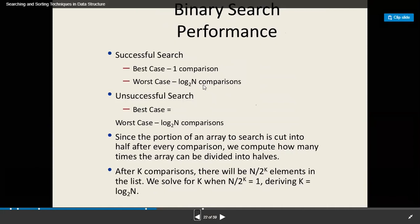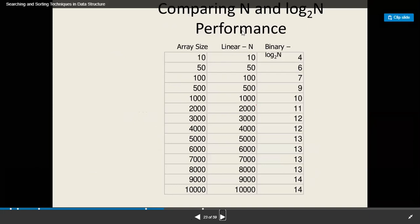The worst case is log2 to the power n comparisons. That means if the size of array is 8, you need to do 3 comparisons. If the size of array is 16, you need to do 4 comparisons. This is much, much more faster than linear search.